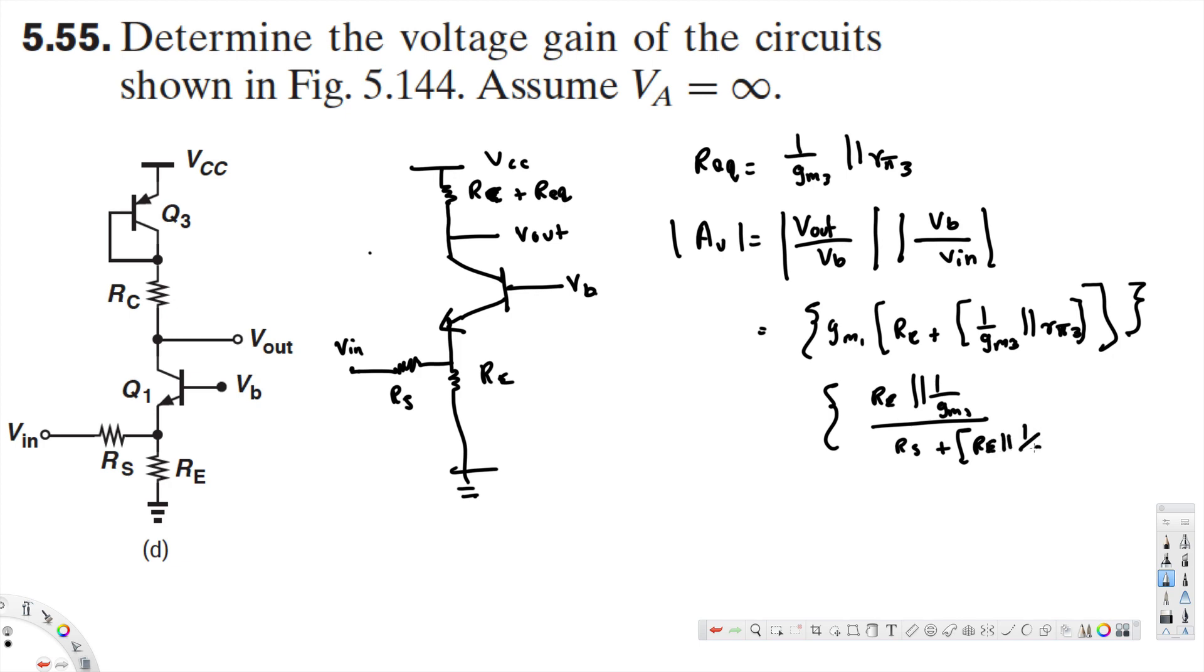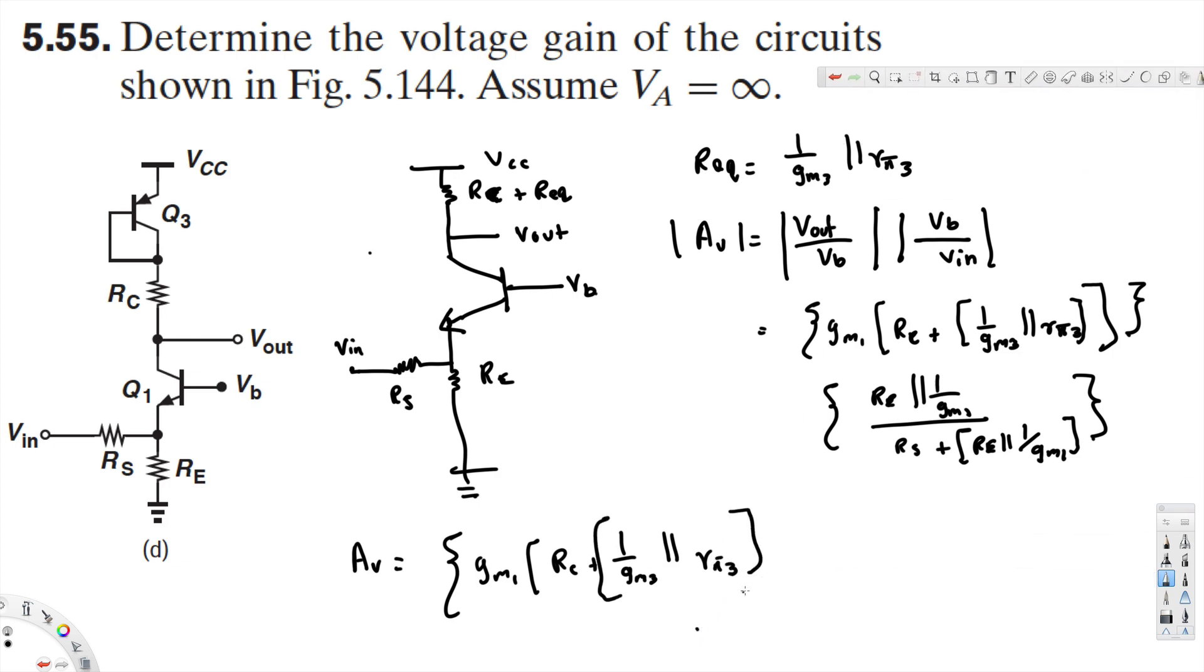Now from this we can write the equation for the voltage gain: AV equals GM1 times (RC plus 1 over GM3 parallel RO3) times